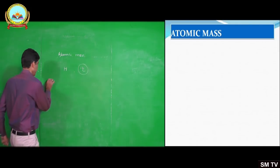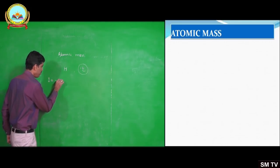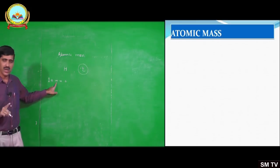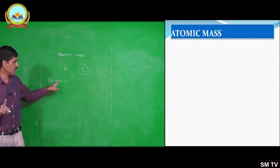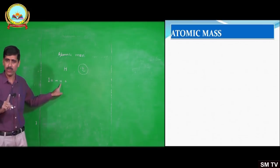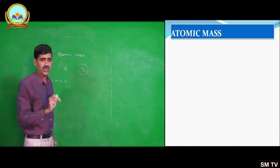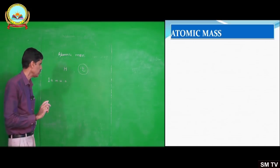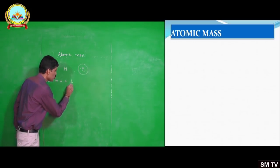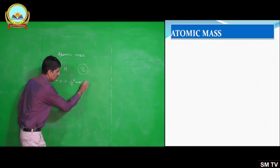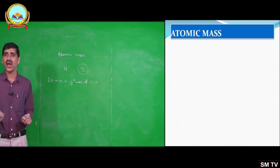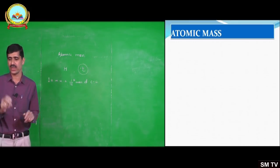Carbon-12 is the denominator. The atomic mass is expressed in terms of AMU — atomic mass unit. Remember: 1 AMU, where A stands for atomic, M for mass, U for unit. Now U is symbolic of unified mass. 1 AMU is 1/12th the mass of carbon-12 — carbon having atomic mass 12.